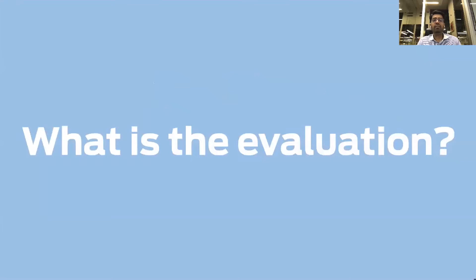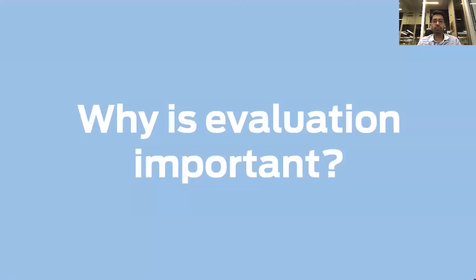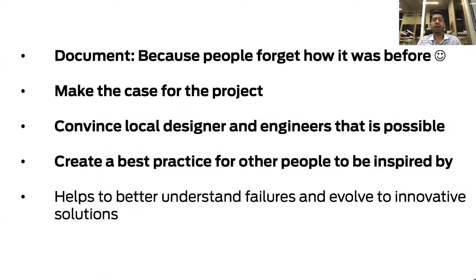We need to evaluate our projects way beyond just the amount of money spent, but to also understand how much did the crashes fall, did it impact the commercial viability of that locality, and do people prefer the new configuration at that intersection or along that corridor. It's important because people often forget how it was before. It helps make a case for projects to scale them up across the city, shows local designers and engineers that bold ideas are possible, and allows people to learn lessons from failures and evolve into better solutions.